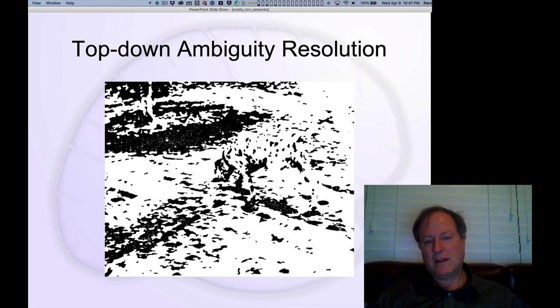It also goes by the name of mutual constraint satisfaction, guaranteed satisfaction from your brain as it follows this gradient of reducing the overall energy and maximizing the overall coherence or harmony of the interpretation.